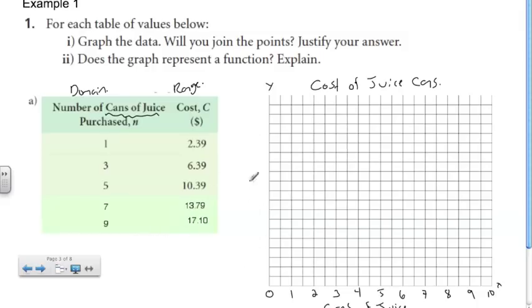For our range, or dependent variable, we're talking about cost. Our first cost is $2.39 and we're going all the way up to $17.10. I'll round that up, let's go up to 20. So if we have $1 for every single line, we'll get up to 20 and that'll use the majority of our graph.